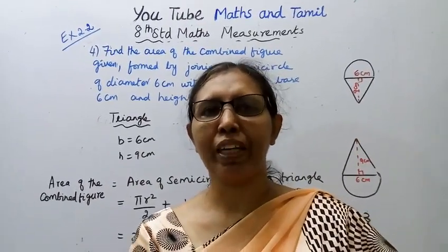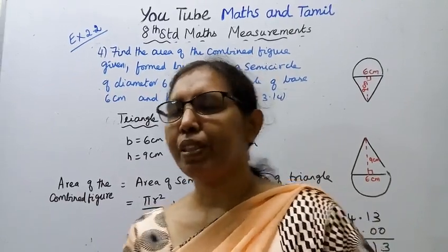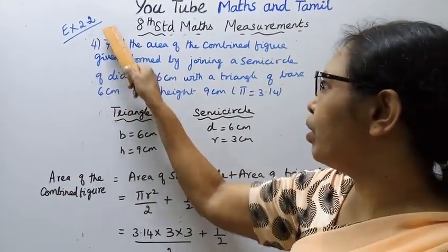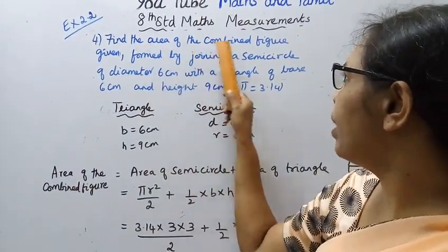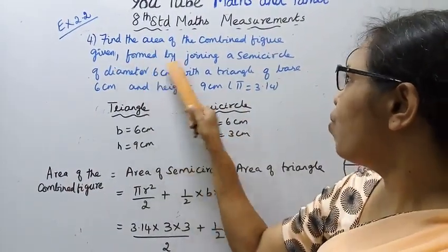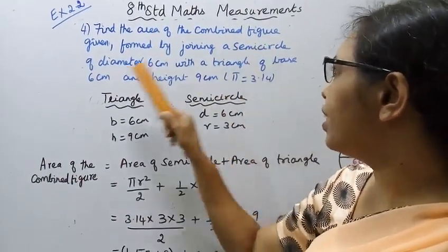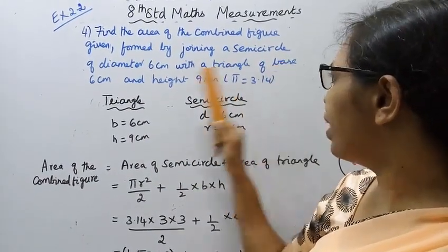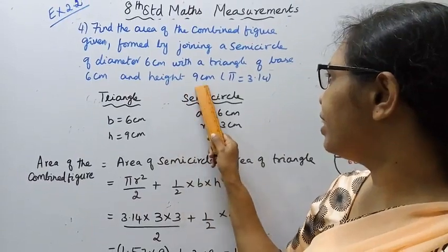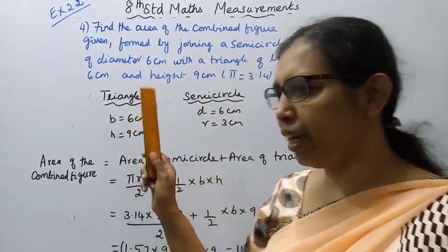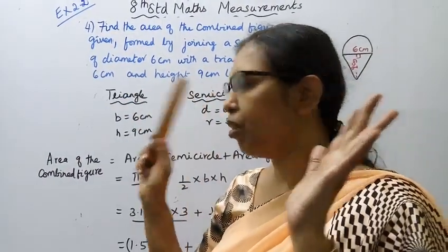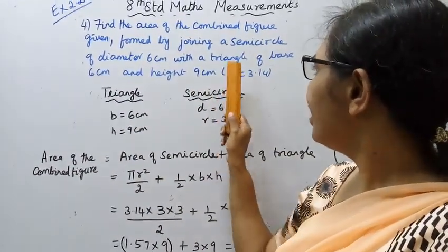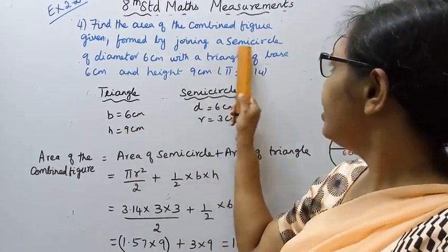Hello students, welcome to Max and Tumble channel. This is Term on Measurements, Exercise 2.2. Find the area of the combined figure formed by joining a semicircle of diameter 6 centimeter with a triangle of base 6 centimeter and height 9 centimeter. Here is the diagram showing the semicircle and triangle.